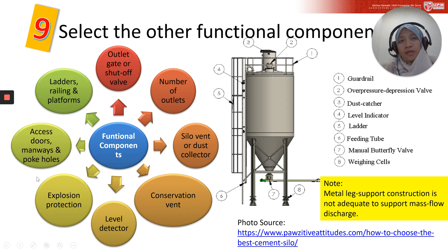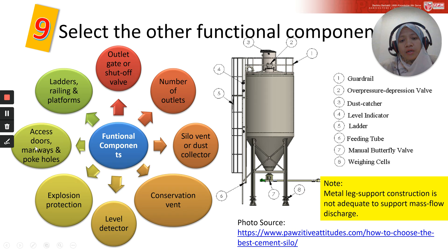Fifth, level detectors. Sixth, explosion protection — depending on the explosivity of the powders, you may need explosion vents, isolation, or suppression systems in the silo design. Seventh, access doors, manways, and poke holes — manways are needed to access and clean the silo, and must be located at the right place so they do not disturb the flowability of powder. Access doors are best located in the cylindrical section rather than the hopper. Poke holes, which are nozzle ports on hopper walls, are not recommended for mass flow as they disturb the flow pattern.